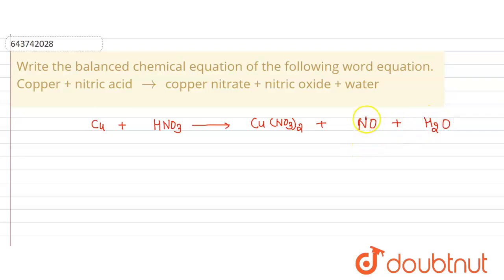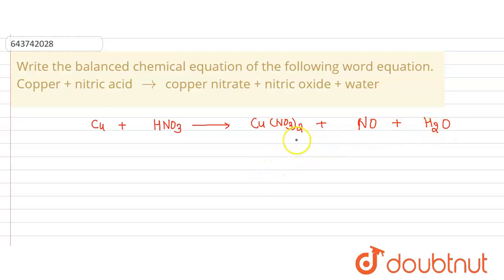First, balance the nitrogen. On the reactant side there are three nitrogen atoms. For oxygen: on the reactant side there are six oxygen atoms; on the product side there are six plus one plus one, totaling eight oxygen atoms. For copper: one atom on the reactant side and one on the product side.